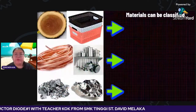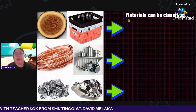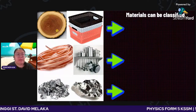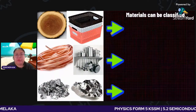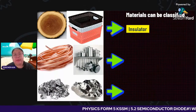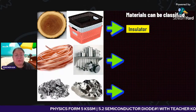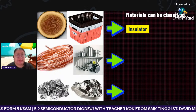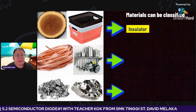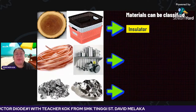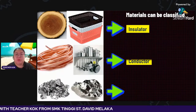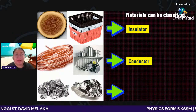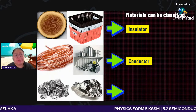Material can be classified into three types. First, you can see the diagram — we've got plastic, we've got wood. This one is under insulator; they do not conduct any electricity. Number two, you can see copper wire, and some utensil material in the kitchen made by metal — this one is under conductor, meaning they can conduct electricity and heat.